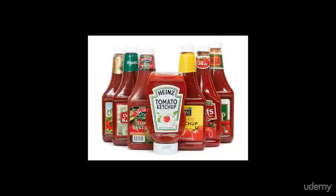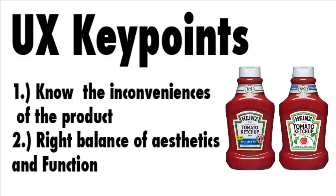A few years later, to improve UX, the Heinz company decided to modify the shape of the bottle. Nowadays, the Heinz ketchup bottle has a wider opening at the tip. Instead of a small bottleneck opening, it has a large opening at the end. The bottle is now positioned upside down, with the tip at the bottom, and a wide flat surface on top.